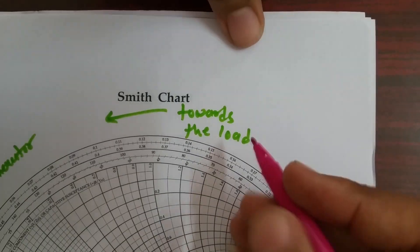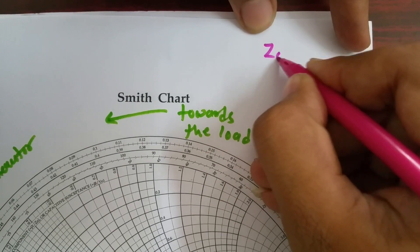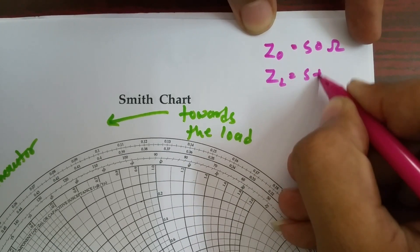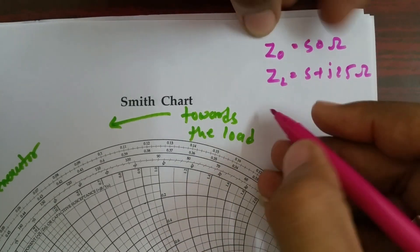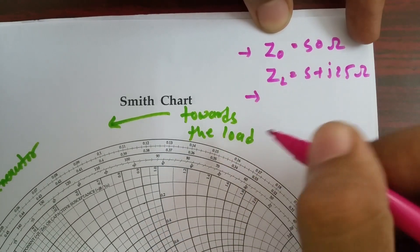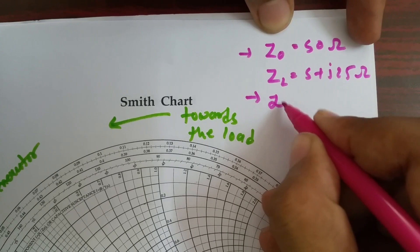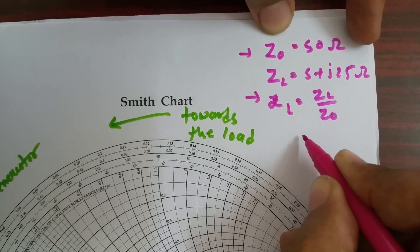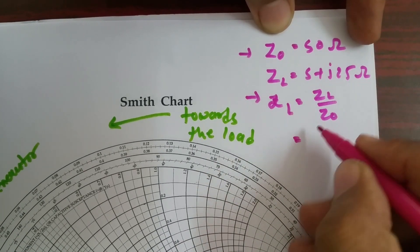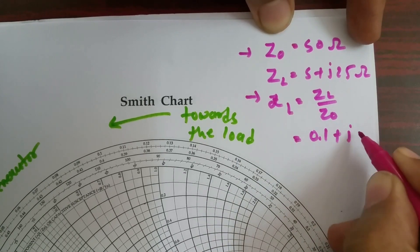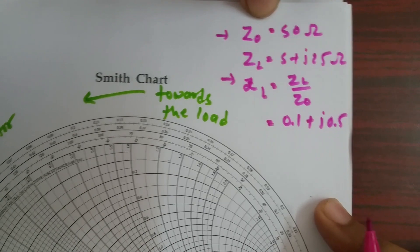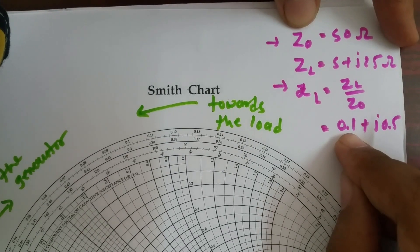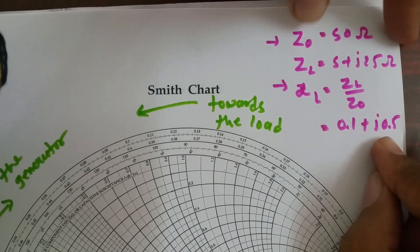Z0 is 50 ohm and ZL is 5 + j25 ohm. In the Smith chart, we need to plot the normalized impedance. The normalized value of ZL is the actual value of ZL divided by Z0, which is (5 + j25) / 50 = 0.1 + j0.5. When we plot ZL on this Smith chart, the real part should be 0.1 and the imaginary part should be positive 0.5.